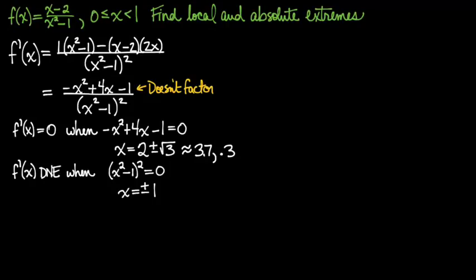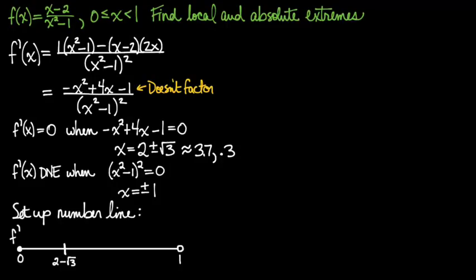Now I need to analyze this closely so I get out decimal approximations, 3.7 and 0.3, and I set up my number line for f prime. Now because the interval given was 0 to 1, I get to ignore three of the four candidates.